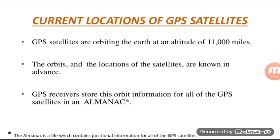GPS satellites orbit the earth at an altitude of 11,000 miles — approximately 1 mile equals 1.6 km. The orbits and locations of satellites are known in advance. GPS receivers store this orbit information for all GPS satellites in an ALMANAC, which is a file containing position information for all of the GPS satellites.